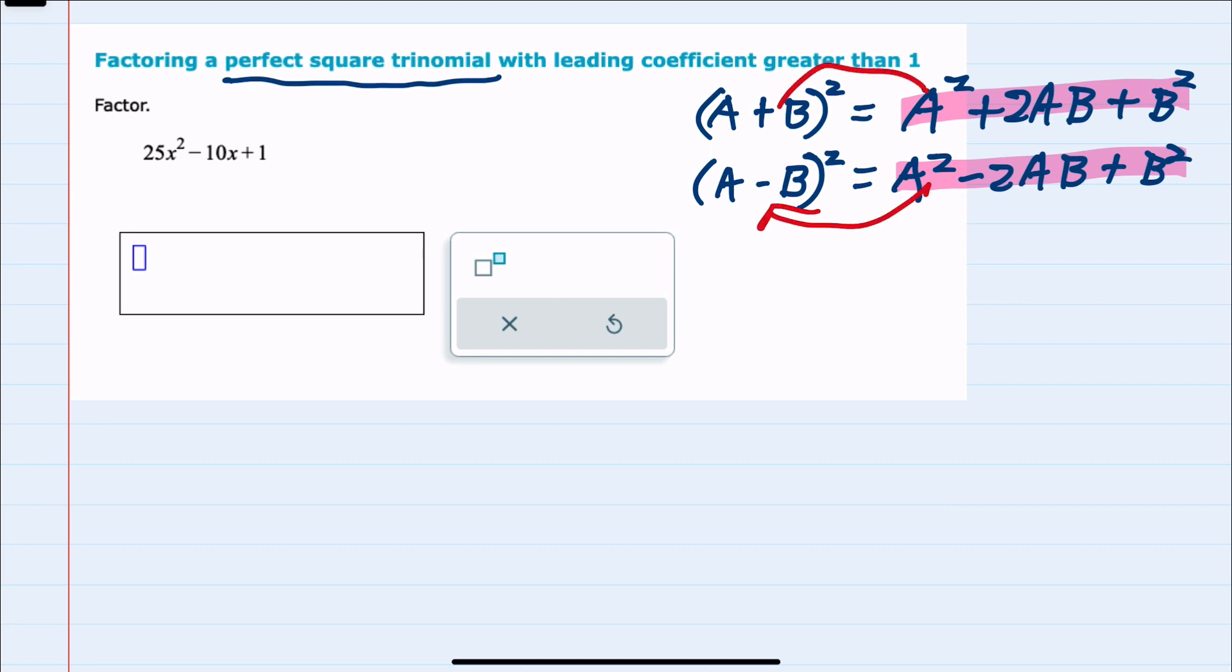So first notice that on the right hand side, I have these a squareds. I could rewrite this first one as being (5x)². I also noticed that the last term has to be squared. And here our last term is 1, but I can write that as 1².